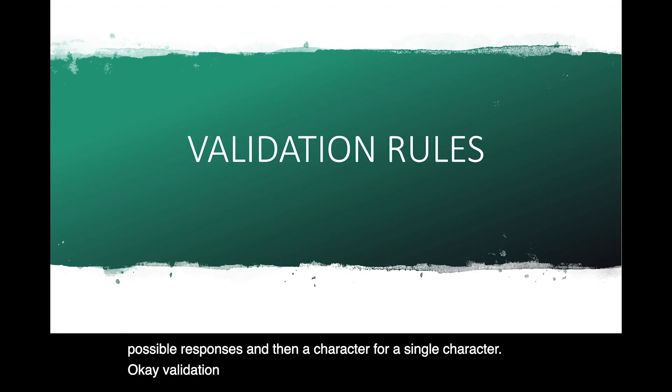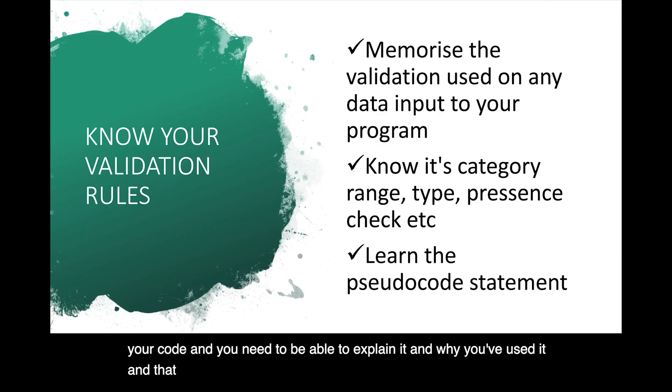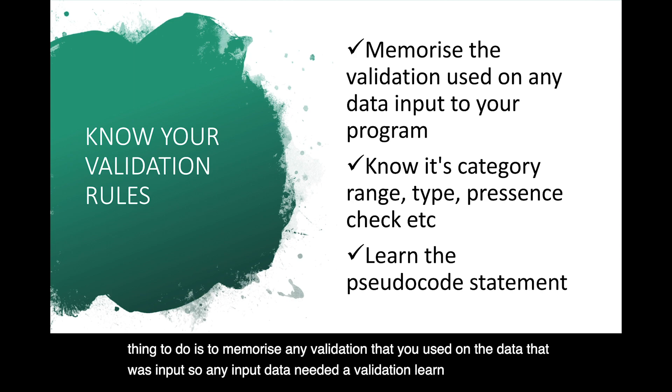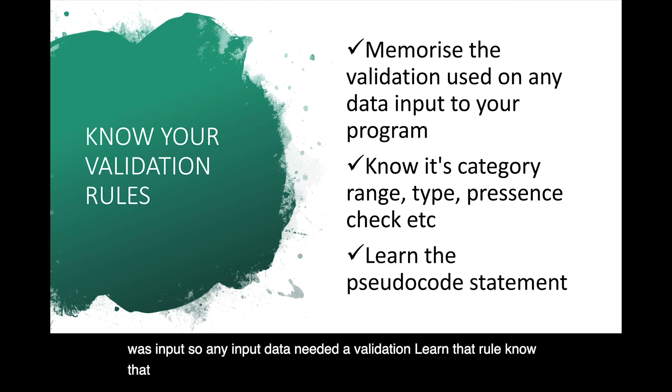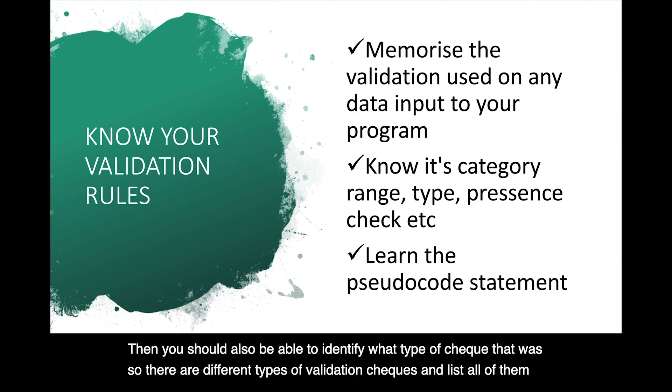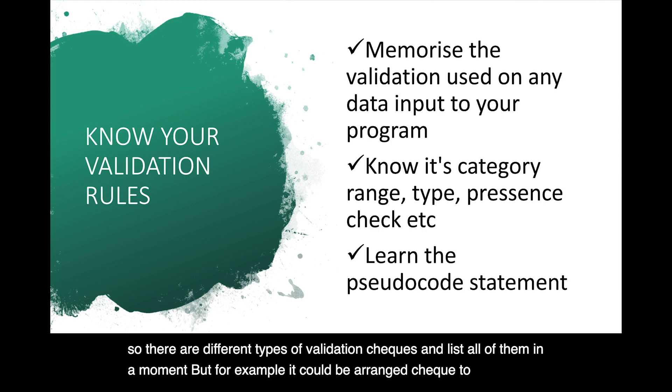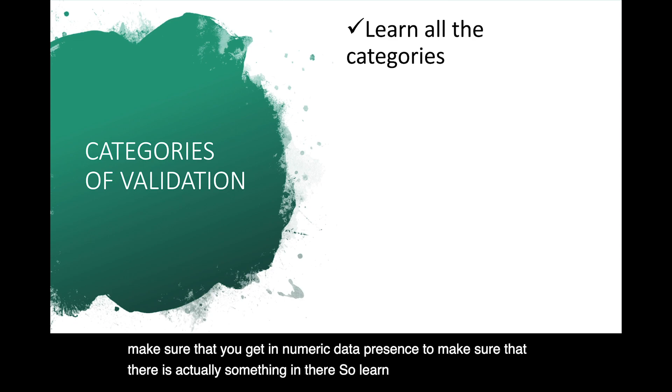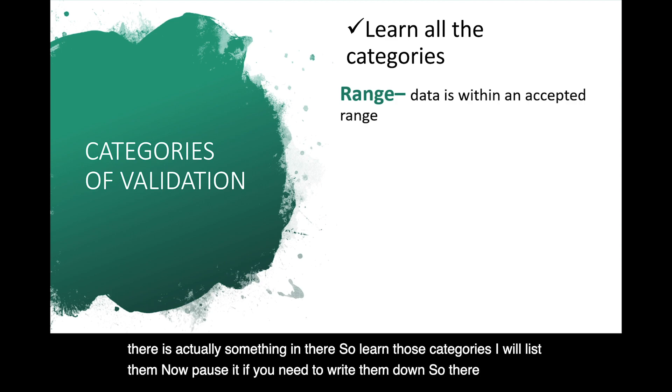Okay, validation rules. This is important. You will have a validation in your code, and you need to be able to explain it and why you've used it, and that should be related back to data type as well. So the important thing to do is to memorize any validation that you used on the data that was input. So any input data that needed a validation, learn that rule. Know that rule as a piece of code that you can write out, either pseudocode or in a programming statement. Then you should also be able to identify what type of check that was. So there are different types of validation checks, and I'll list all of them in a moment, but for example, it could be a range check to identify that the numbers input are within the correct range. It could be a type to make sure that you're getting numeric data, presence to make sure that there is actually something in there. So learn those categories, and we'll list them now.